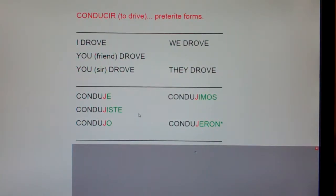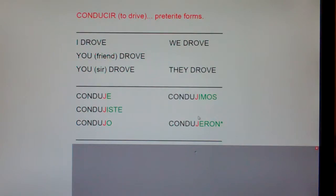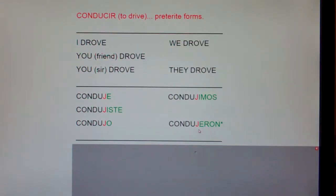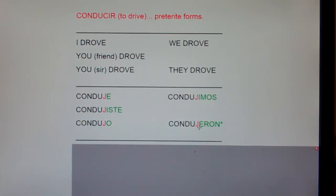Another thing you might be noticing is these endings. Notice it ends in E, I-S-T-E, O, I-M-O-S, E-R-O-N. Hold it, Mr. Holt — why isn't it I-E-R-O-N? Well, notice that little star. For complicated reasons that are more Spanish 3 than Spanish 2, in Spanish you can never have J-I-E; it's always J-E. Remember how I've talked about you just say no to three in a row — you can't have three vowels in a row, you can't have three consonants in a row. Along those lines, you can never have J-I-E in Spanish together.